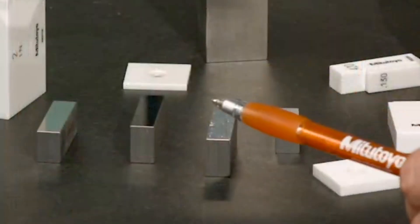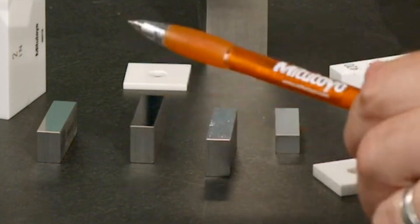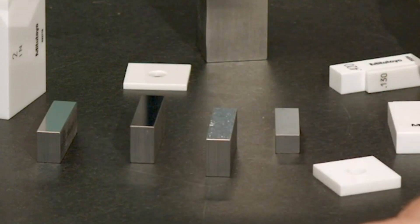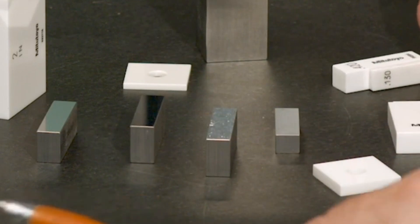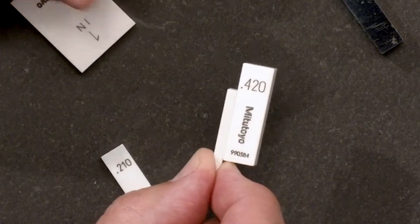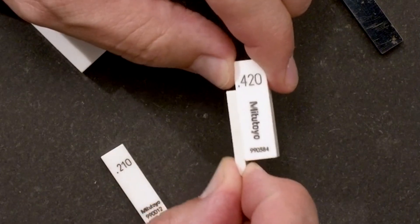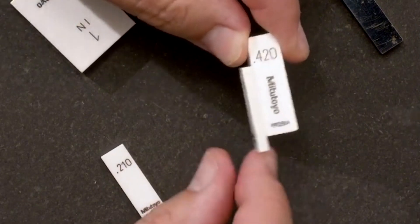That's a brief introduction to Gauge Blocks. How do we use them? Gauge Block faces are very flat and very smooth. The reason for this is that that allows Gauge Blocks to ring together. Without using any adhesive, Gauge Blocks can be brought together and the flat, smooth surfaces will adhere to each other without causing any damage.